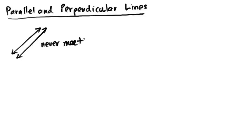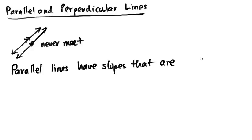This is a symbol used in math for parallel lines — sometimes they put a double little arrow on them to show that those lines never meet. All parallel lines have a special property with respect to their slopes: parallel lines always have slopes that are equal. If they never meet, then the rise and run of both have to be the same; if they were different, they would eventually intersect at some point.